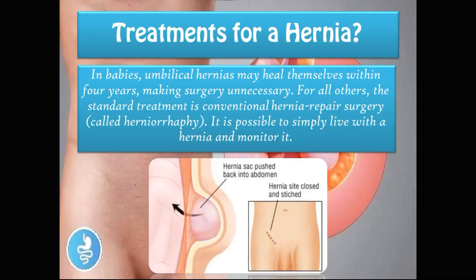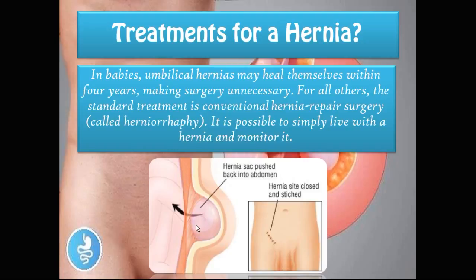What are the treatments for abdominal hernias? In babies, umbilical hernias may heal themselves within four years, making surgery unnecessary. For all others, the standard treatment is conventional hernia repair surgery called a herniorrhaphy. If the hernia is small and not producing many symptoms, it is possible to simply monitor it. If the hernia is larger or causes significant symptoms, surgery is taken. In herniorrhaphy, the hernia sac is pushed back into the abdomen and the site of weakness is sutured up so the intestine cannot escape again through those layers.